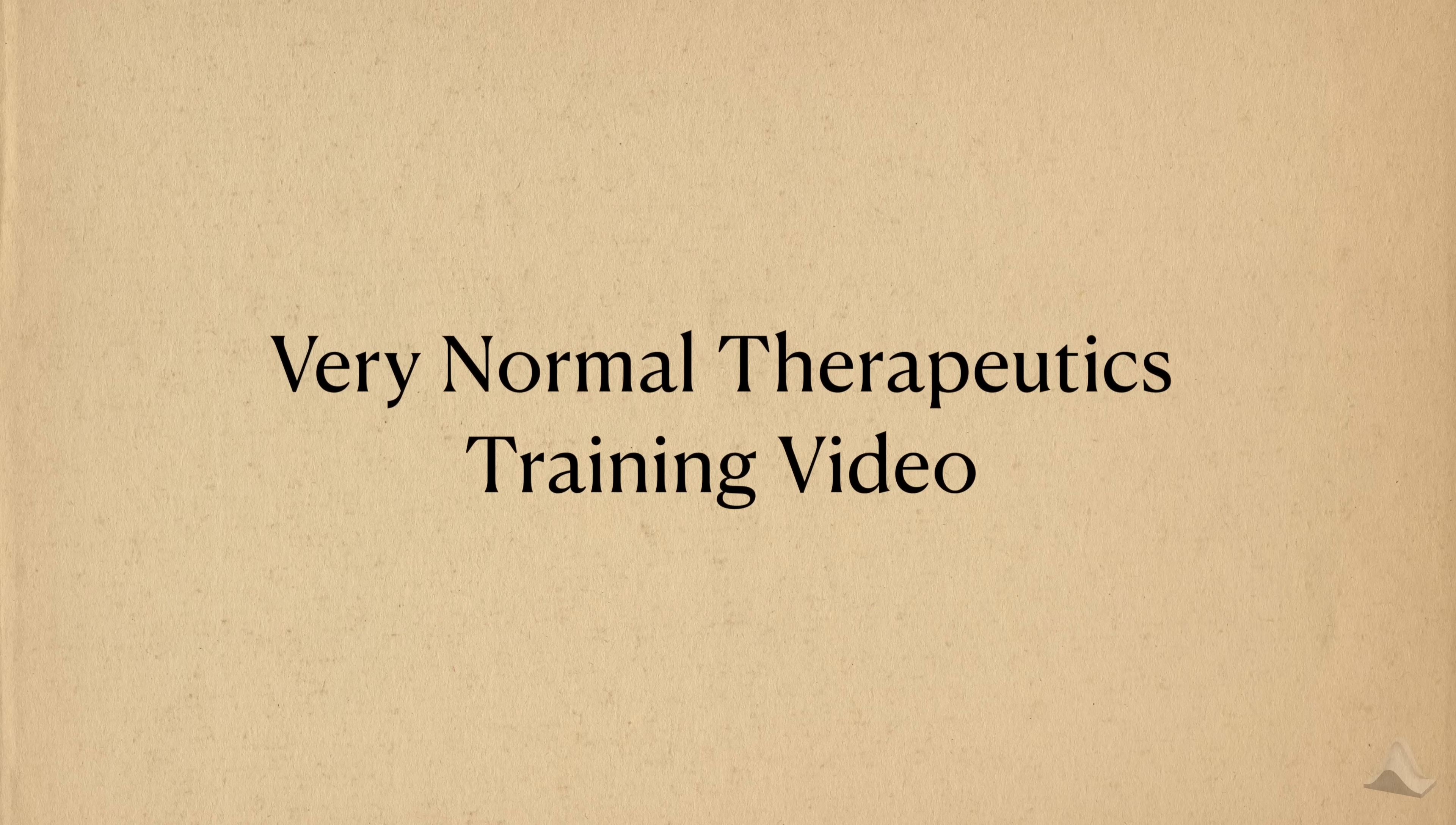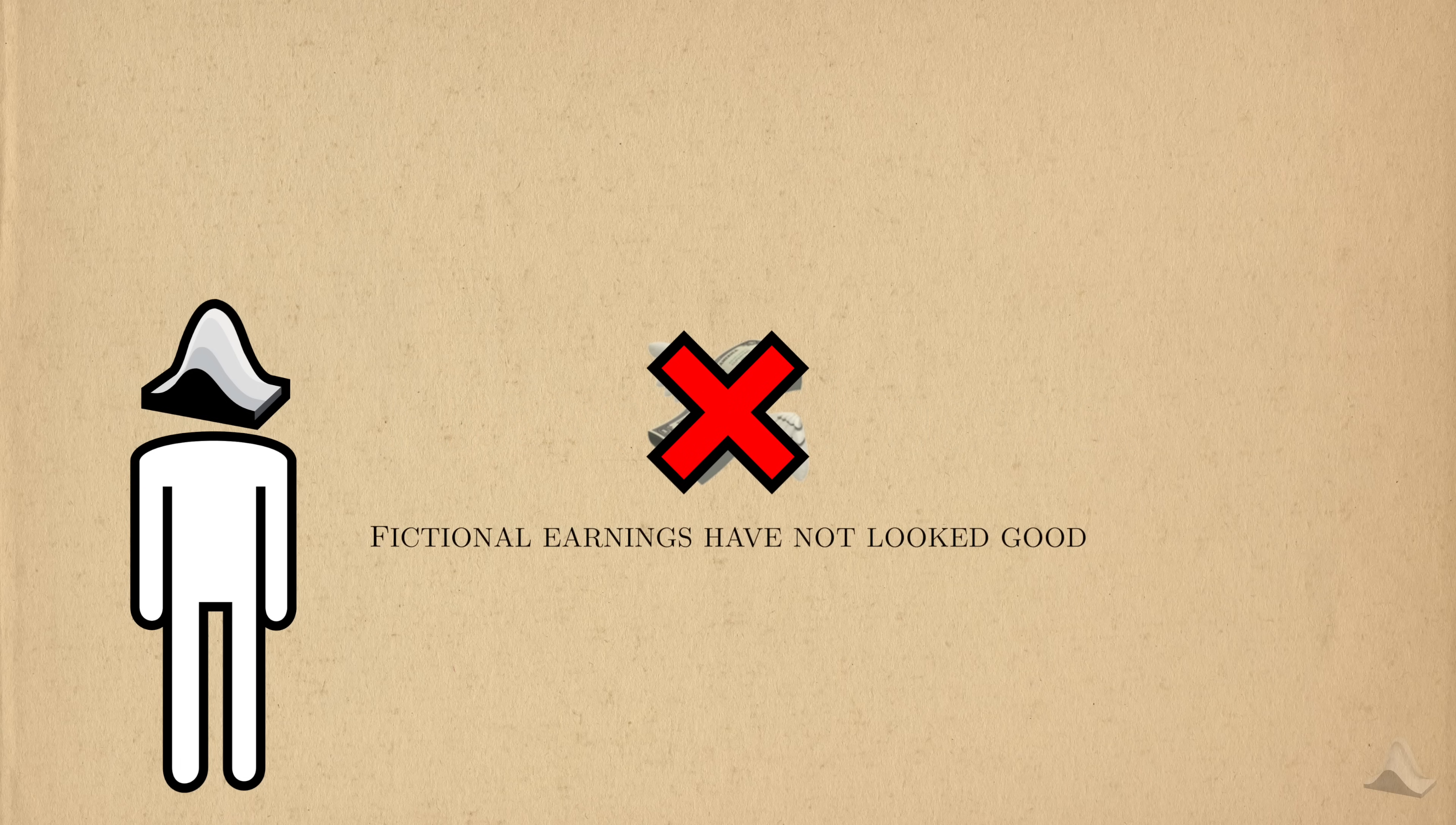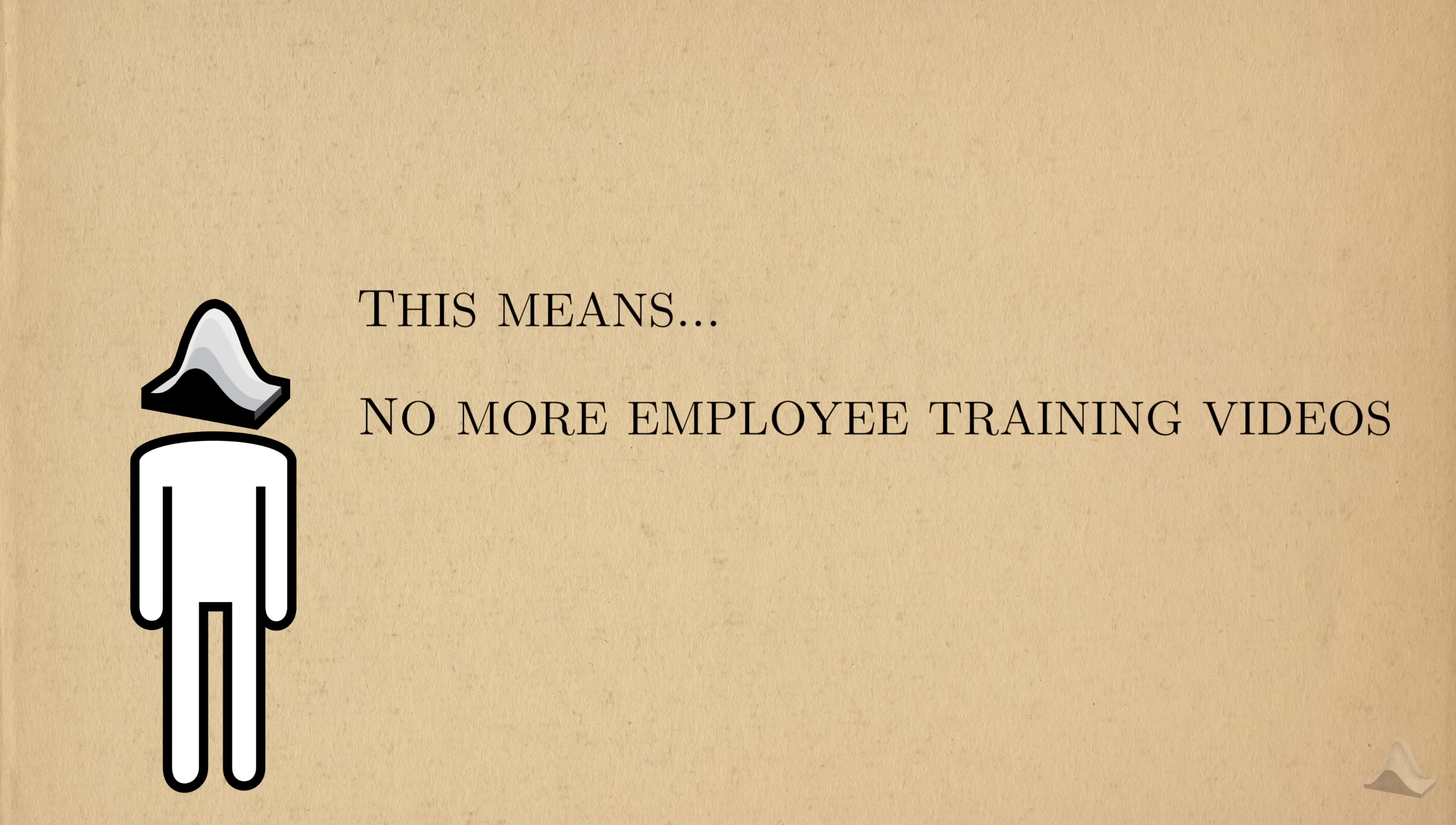This is a VeryNormal Therapeutics employee training video. The topic of this video is the generalized linear model. Before I start, I have some bad news. The earnings for VeryNormal Therapeutics were not great this quarter, so VeryNormal Therapeutics is actually shutting its doors at the end of the year. But since this was a fictional company, it only really affects me. But this means no more employee training videos.